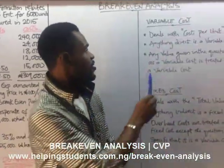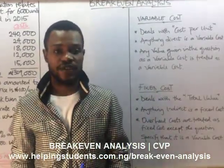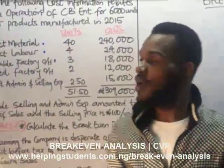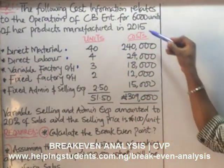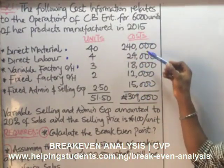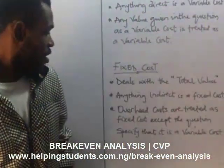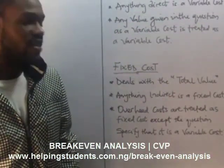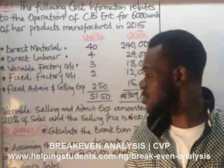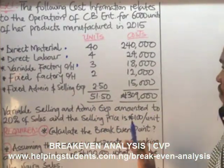Following these three steps, we are able to identify our variable costs. Now let us consider the fixed cost. The fixed cost deals with the total value column. So our fixed cost will come from the total cost figures. Anything indirect is a fixed cost — but in this question, we don't have anything indirect.